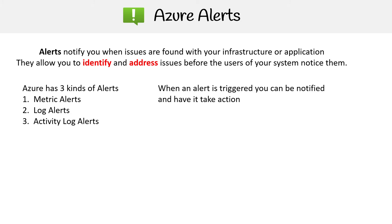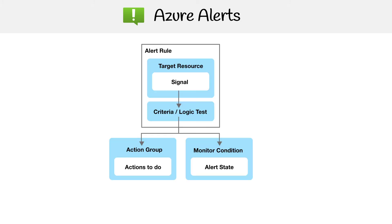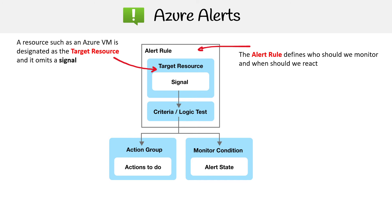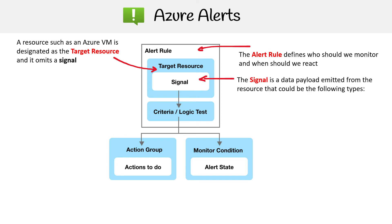When an alert is triggered, you can be notified or have it take action. Here is the anatomy of an alert. We have the alert rule, which defines what we should monitor — like the service — and the definition of when it is triggered. A resource such as a virtual machine, designated as the target resource, will emit a signal, which is going to be emitting a data payload.